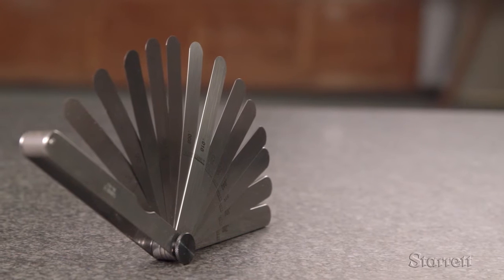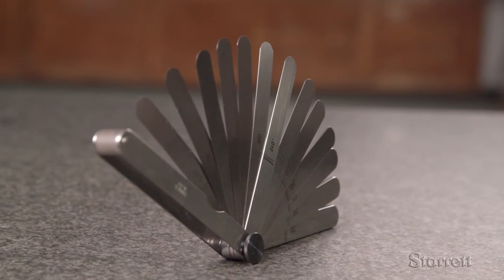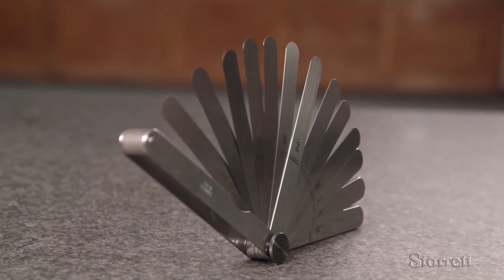Thickness gauges are used to precisely measure gaps for many applications in and out of the shop. The model 67 thickness gauge has 13 leaves ranging from 0.0015 inches to 0.2 inches.